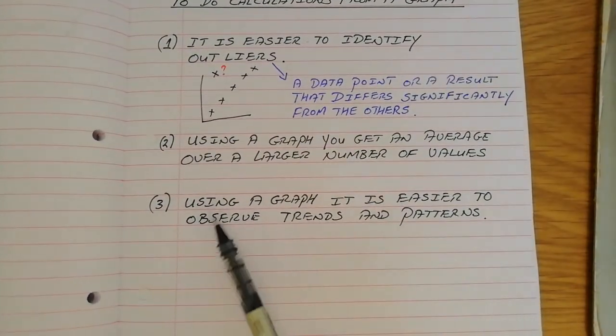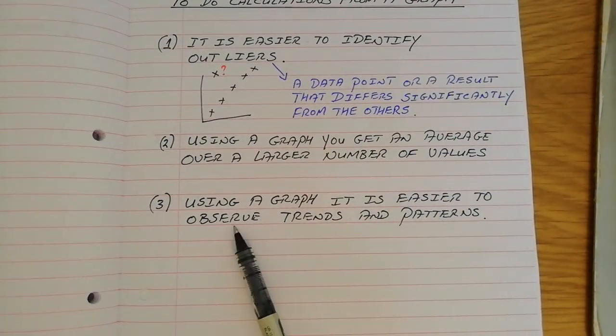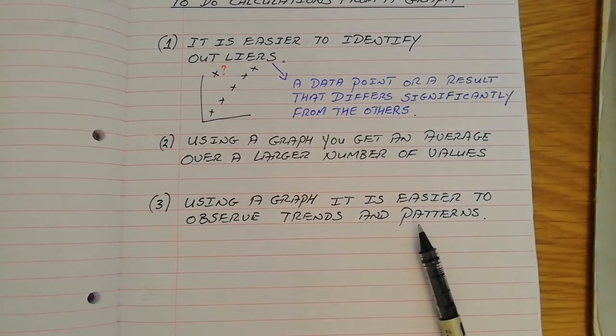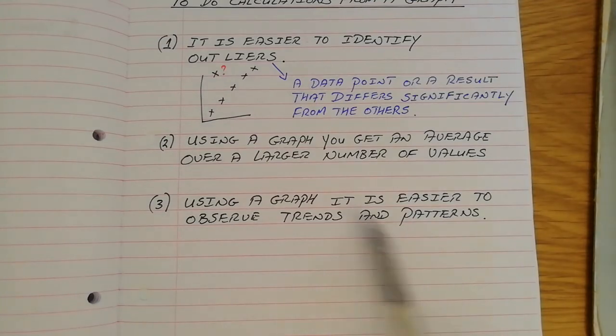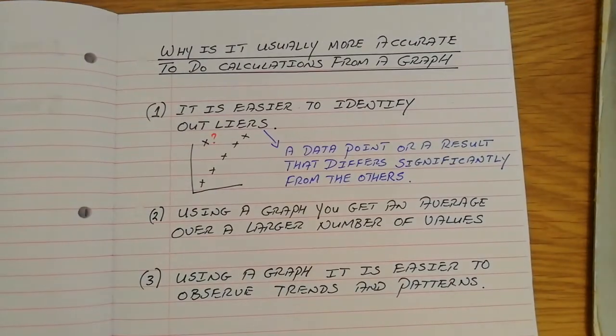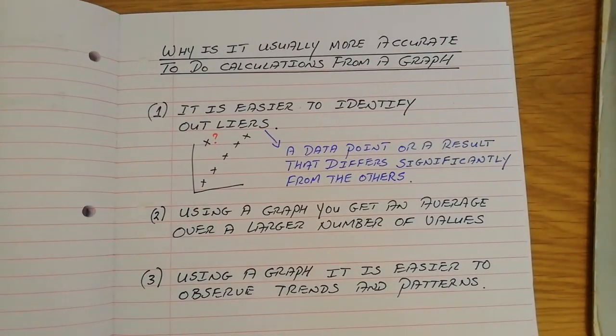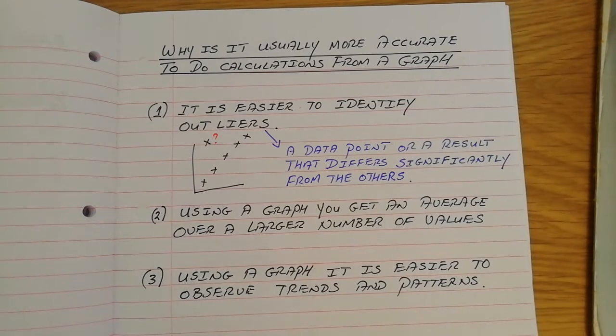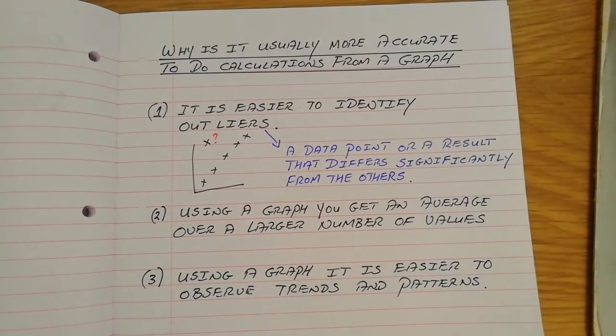When you get the slope of a graph, you're not just using those individual points, you're using all the points on the line. Third thing, why is a graph a very good idea? Using a graph, it is easier to observe trends and patterns, to see if things are proportional, directly proportional, inversely proportional, to see what kind of relationship are between the two sets of results that you have plotted. I would actually ask you to take that down into your experiment copy and write a little note on that because it has come up a few times recently in the leaving cert.